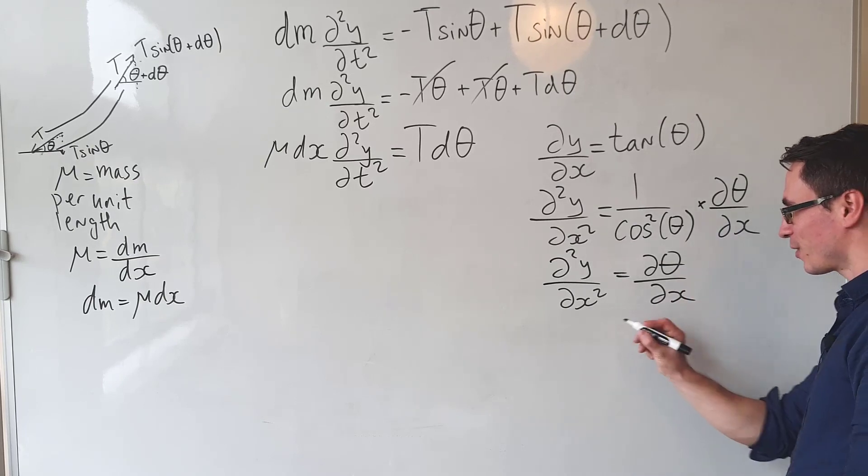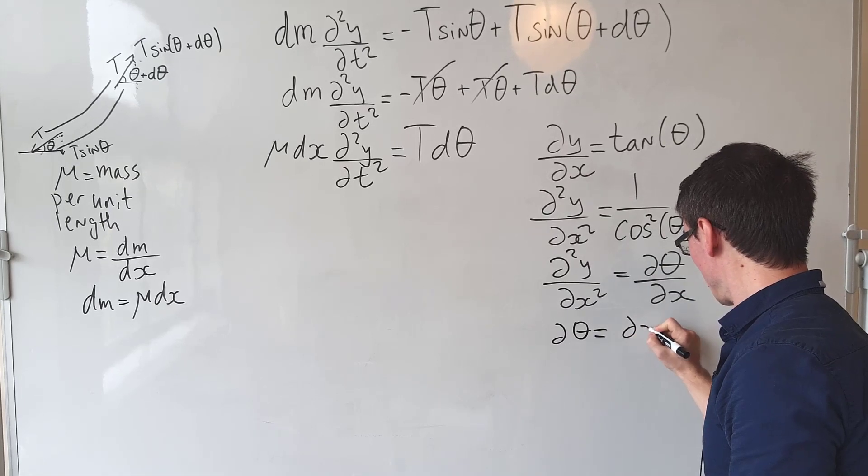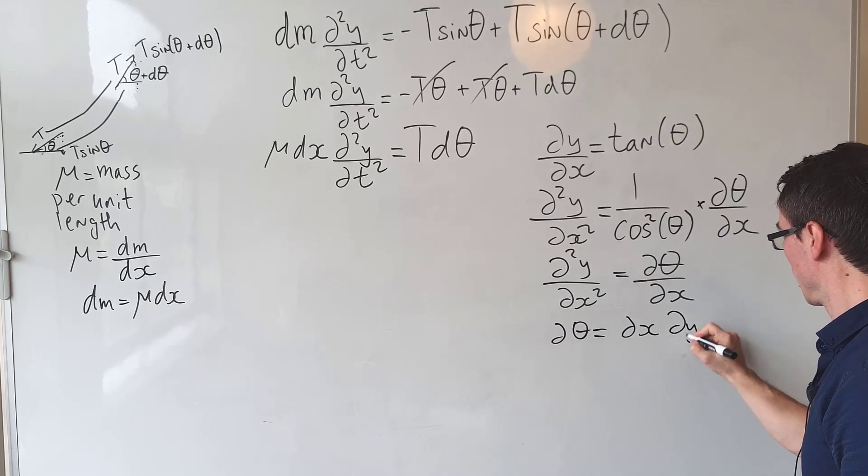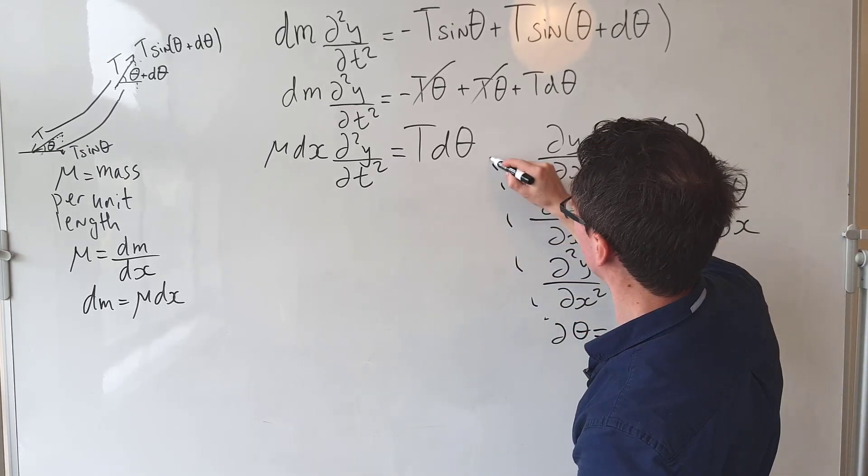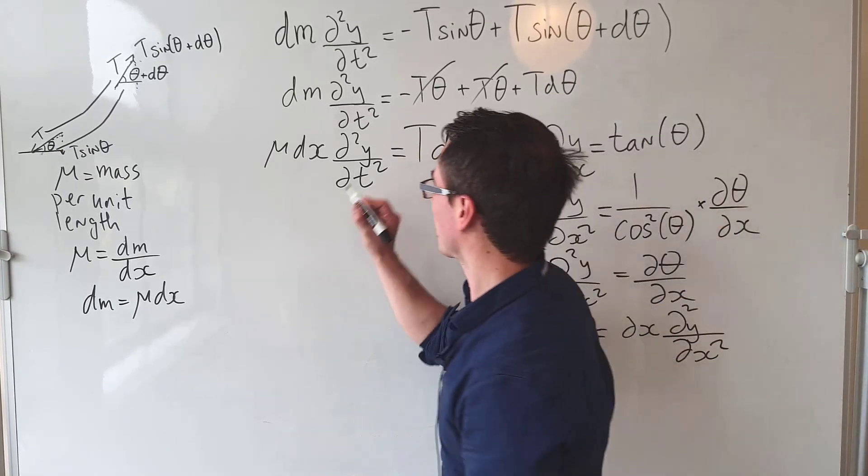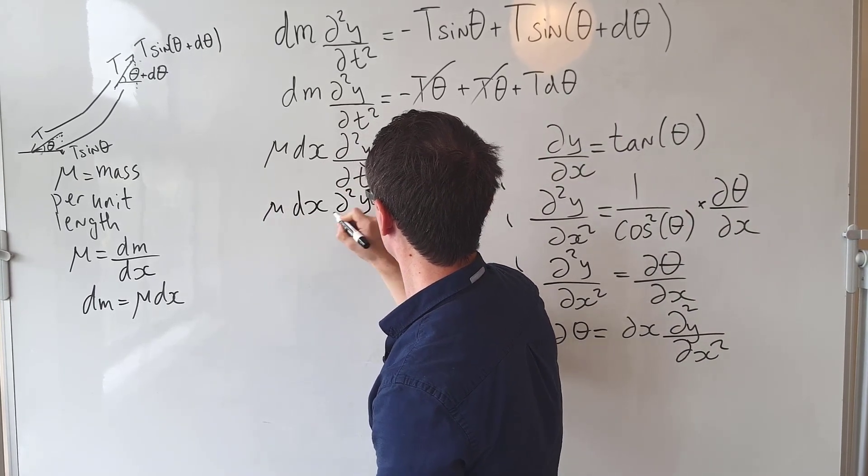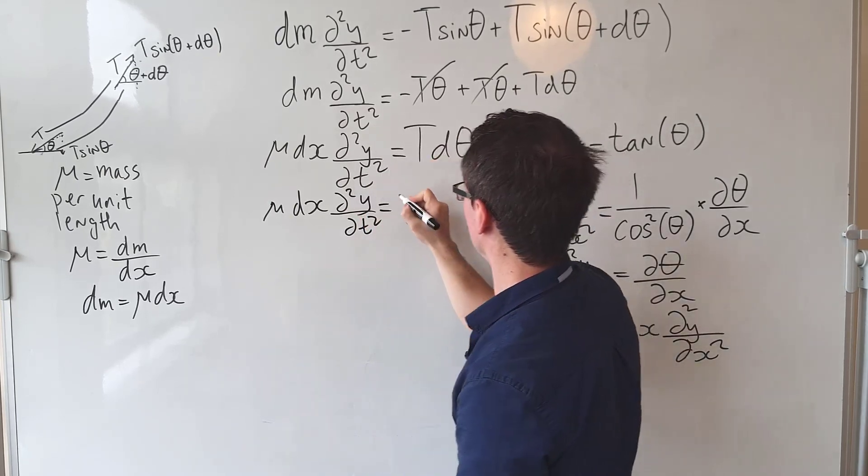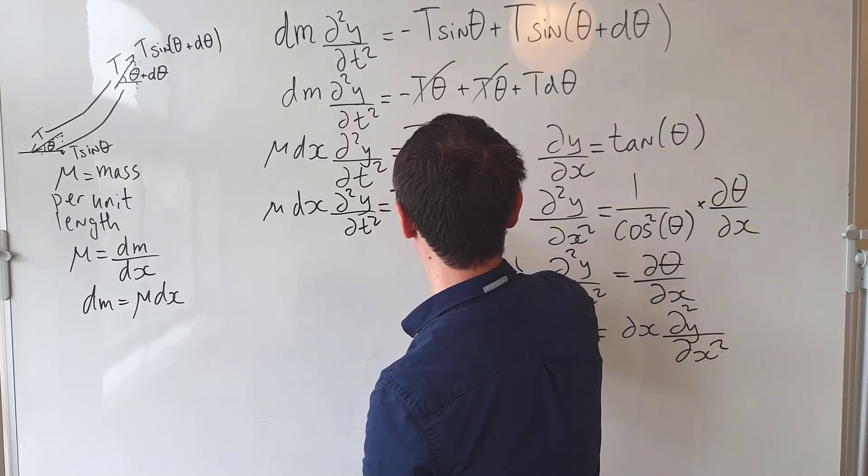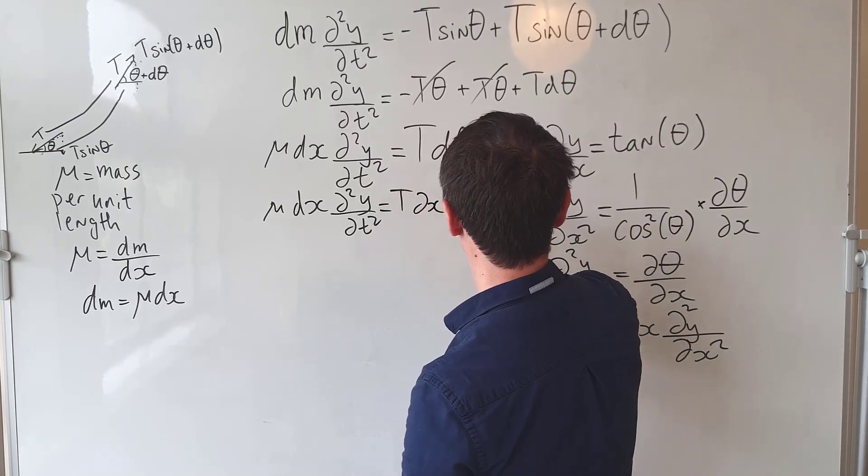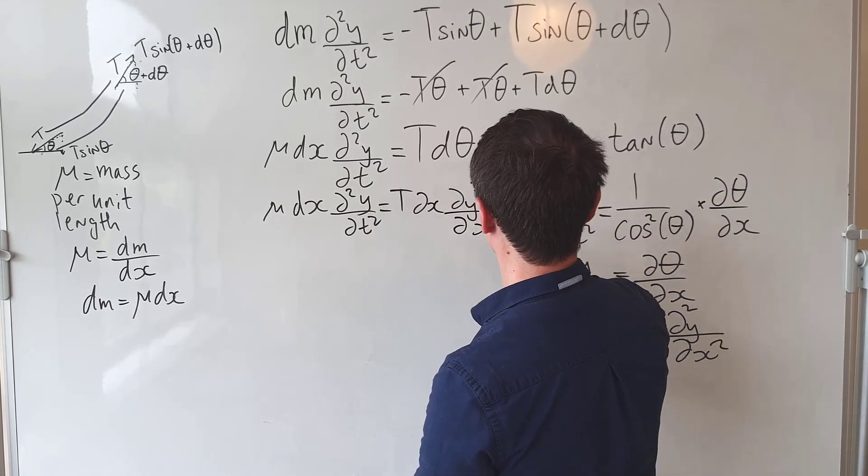And now I can just rearrange this for d theta, which will just be equal to dx times d²y/dx². I can plug this in, and what I'm going to get is that mu dx times d²y/dt² equals T, and then rather than d theta I'm going to write dx times d²y/dx².